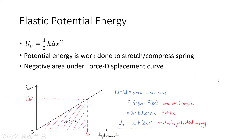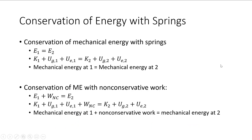Elastic potential energy is one-half k delta x squared, and we get that from the force-displacement curve. Because we have elastic potential energy as a type of mechanical energy, we can incorporate it into our conservation of energy equations.